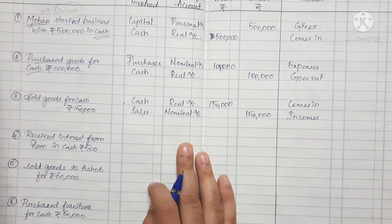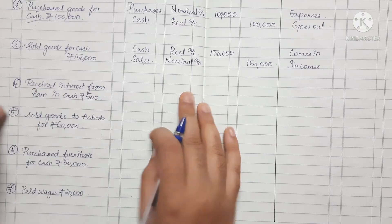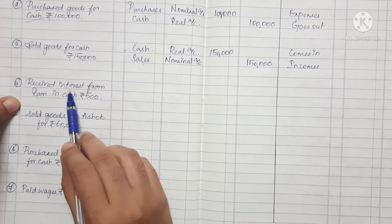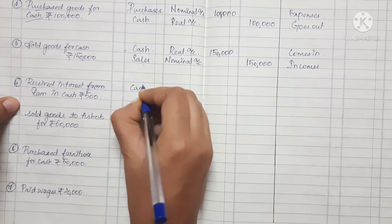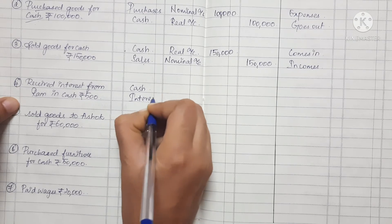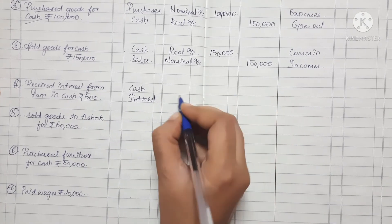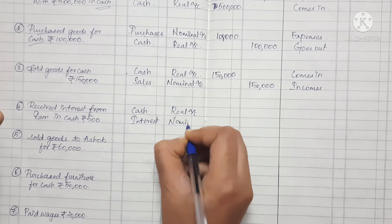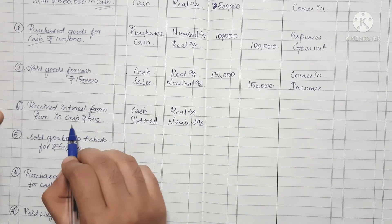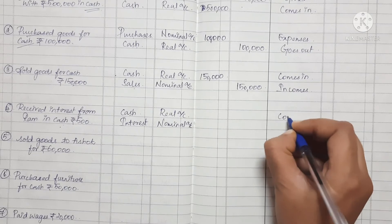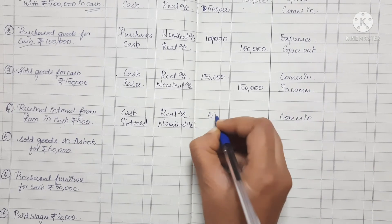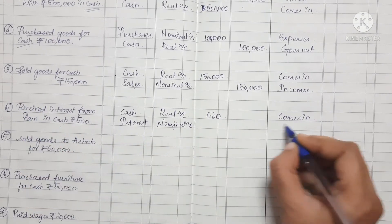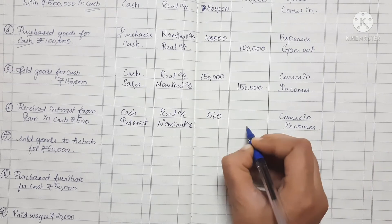Fourth transaction: Received interest from RAM in cash, Rs.500. Two accounts involved: cash and interest. Cash is a real account; interest is a nominal account. Cash is received — it comes in — so cash is debited Rs.500. Interest is income, so under the nominal account rule, interest is credited.